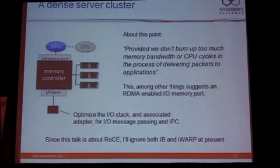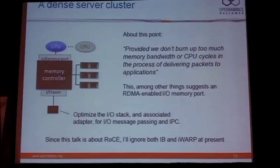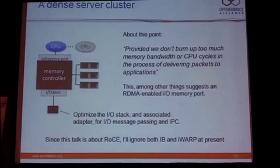There are a couple of forms of RDMA we could use because, as we all know, the verbs API is transport independent. It could be InfiniBand, it could be iWARP, it could be RoCE — it doesn't really much matter. But since this talk is about RoCE, I'm going to ignore both IB and iWARP as options here and focus strictly on RoCE as the RDMA engine sitting above the Ethernet fabric.